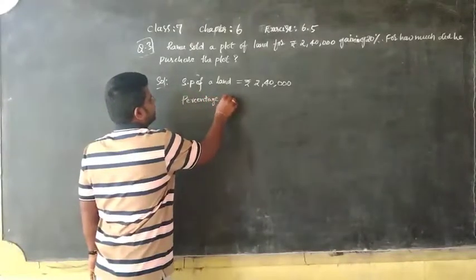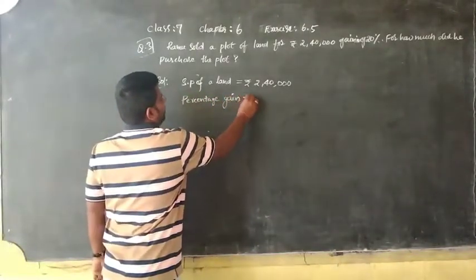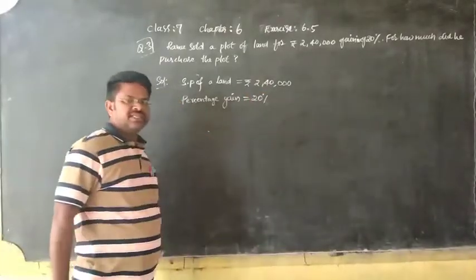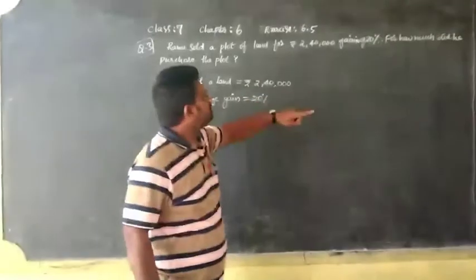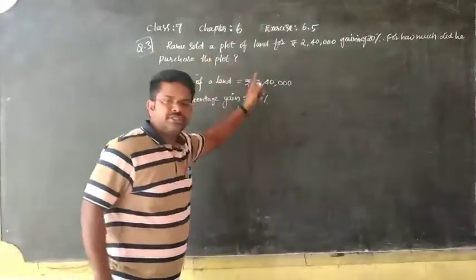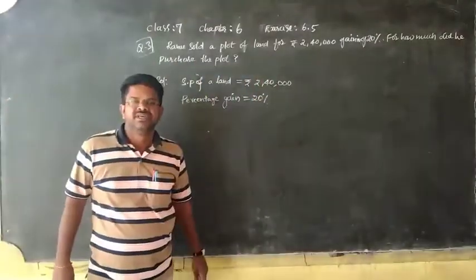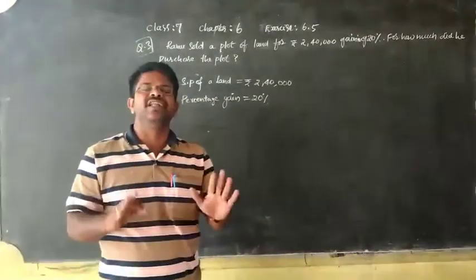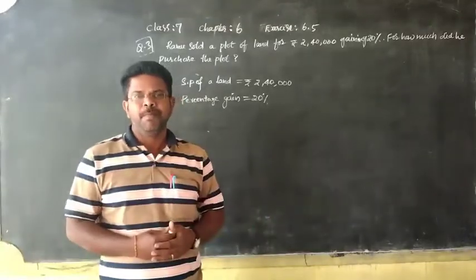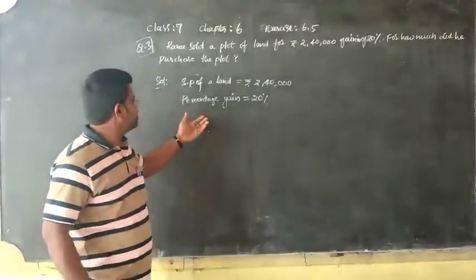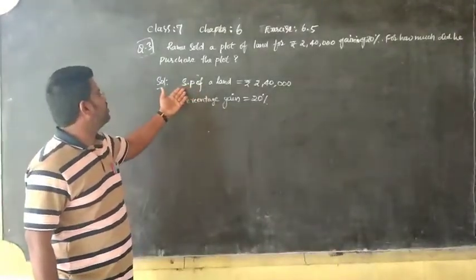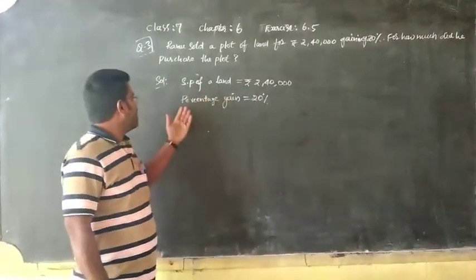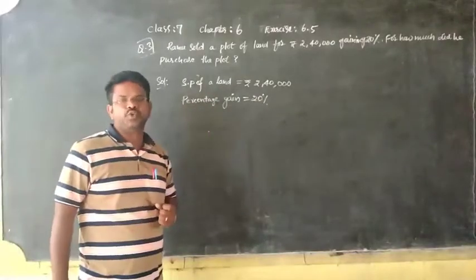He's asking, how much did he purchase the plant? Cost price - what is the cost price? The given information from the problem is: SP, selling price of land, is two lakh forty thousand, and the percentage of gain is twenty percent.